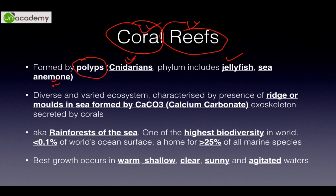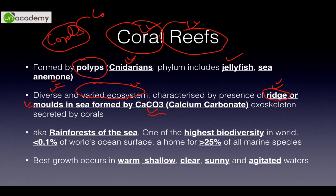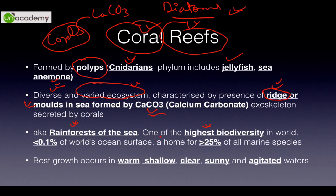Coral reefs have a diverse and varied ecosystem because they are characterized by ridge formation, also called mounds in the sea, and they are formed by calcium carbonate — extremely important. Corals are living organisms which secrete calcium carbonate. They are also called the rainforest of the sea. They occupy less than 0.1 percent of the world's ocean surface, about three lakh square kilometers, yet they support more than 25 percent of all marine species.